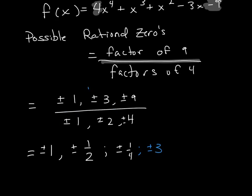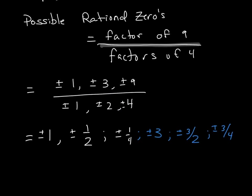The next one would be 3 over 2, which gives me plus or minus 3 halves, and the last one that will have a numerator of 3 is going to be 3 over 4, which is plus or minus 3 fourths. But we're not done yet. Now we have to do the same thing with a numerator of 9. So now we're going to have 9 over 1, that will give us plus or minus 9. The next one would be 9 over 2, which gives us plus or minus 9 over 2, and the last one would be plus or minus 9 over 4.